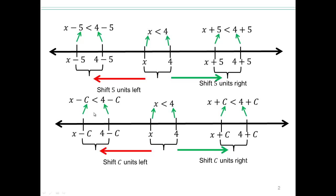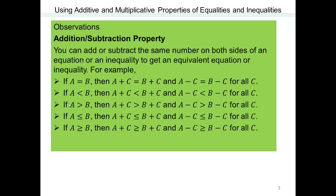Both for equations and inequalities, you can add or subtract the same number from both sides and preserve it. If a equals b, then a plus c equals b plus c, and a minus c equals b minus c. Similarly, if a is less than b, then a plus c is less than b plus c, and a minus c is less than b minus c — and so on for greater-than and greater-than-or-equal. All inequalities are preserved as long as you add or subtract the same number from both sides. If it's an equation, it remains an equation; if it's an inequality, it remains an inequality of the same type.